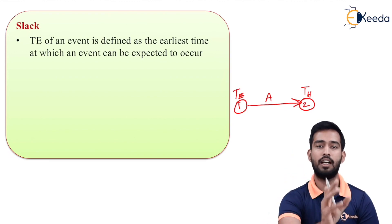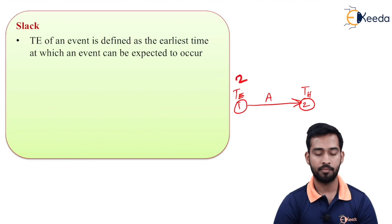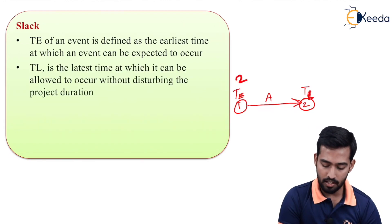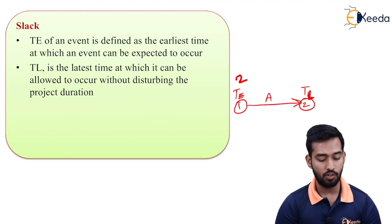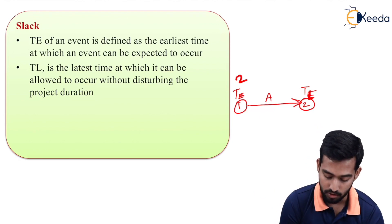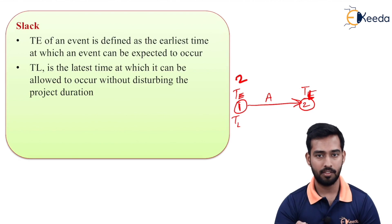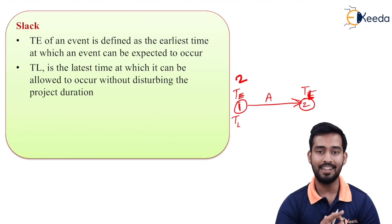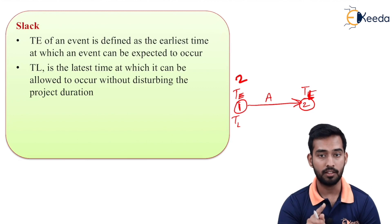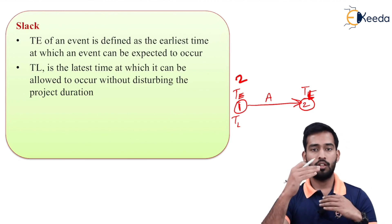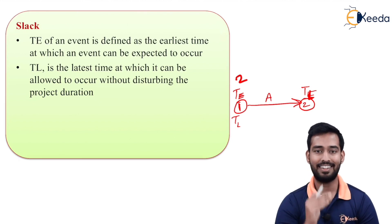For example, activity A can start at two days, so on the second day we can start activity A — that is known as Te. And TL is the latest time at which it can be allowed to occur without disturbing the project duration. So Te is the earliest time at which the activity can occur, and TL is the latest time when we can start that particular activity without disturbing the project duration.